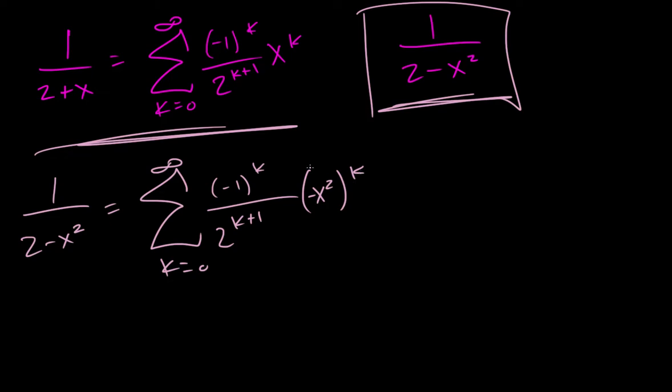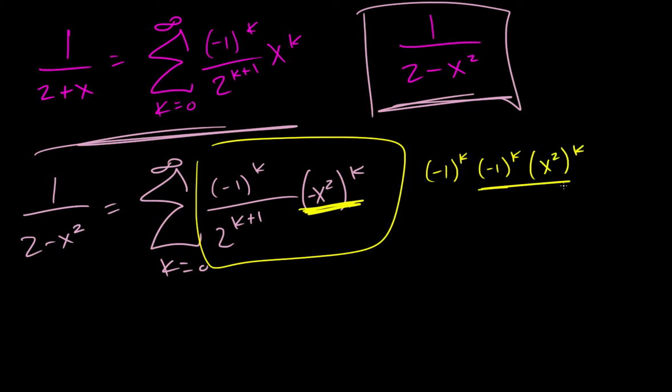And if we simplify that and just bring it up top, let's see, if we pull out a negative 1 is actually what we're going to want to do on that. So we're going to think of this, if I'm looking at this piece, don't worry about the summation yet, we have negative 1 to the k and then if we think of this as negative 1 to the k times x squared to the k, so I'm just splitting this into this.